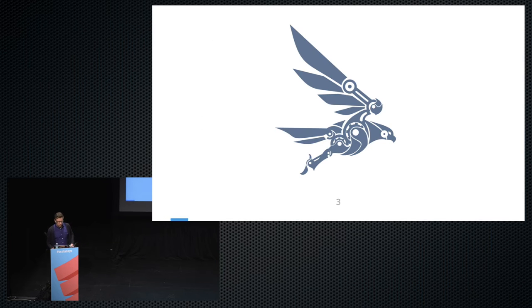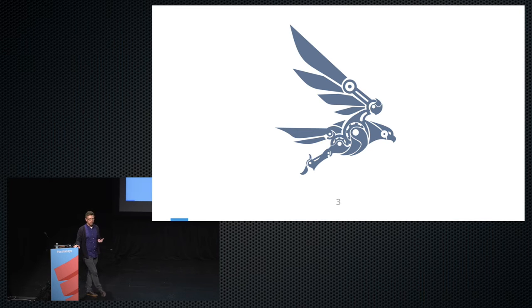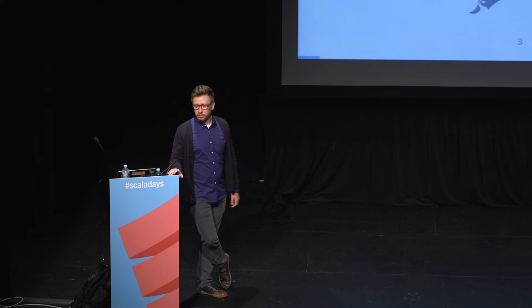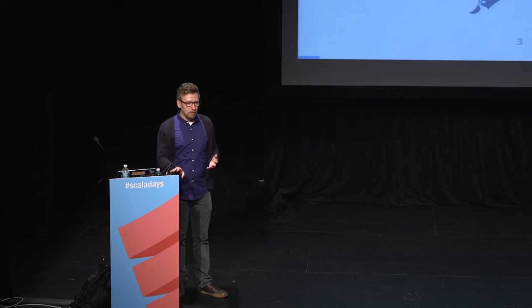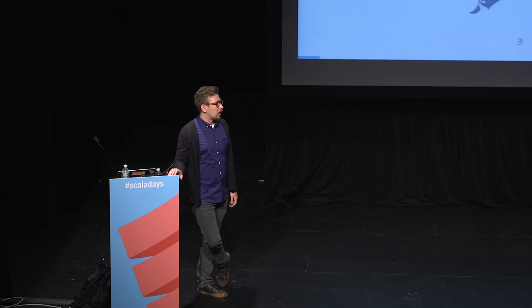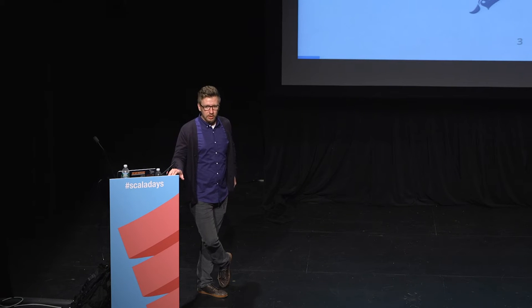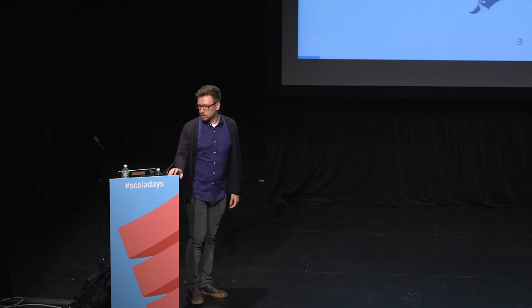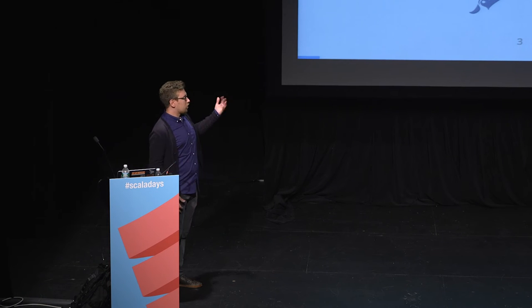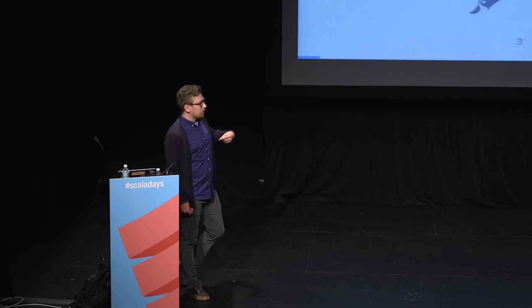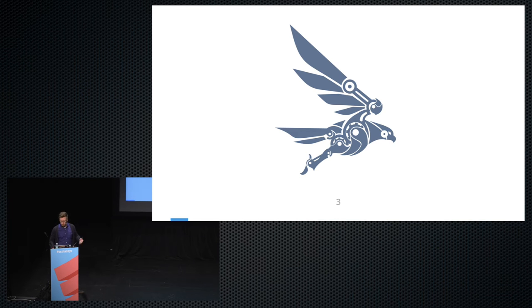What is Finagle? Finagle is an RPC system built and used in production at Twitter and many other companies. It's written in Scala and works on the JVM, but is also very usable from Java — we have internal teams running services in Java quite successfully with Finagle. We also have this robot bird logo: it wasn't named after a bird, but we needed something, so we have a logo that looks like a bird but is a robot.